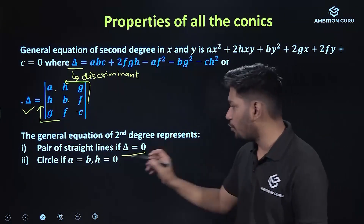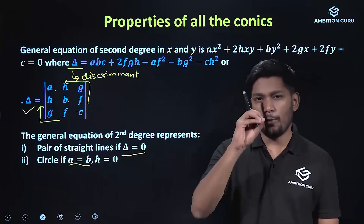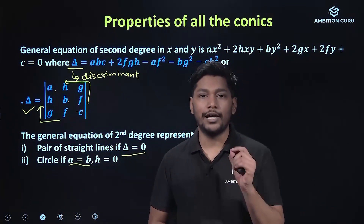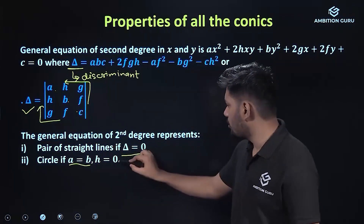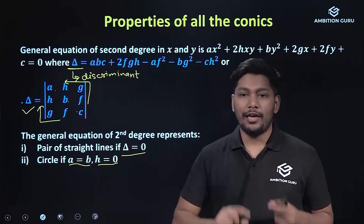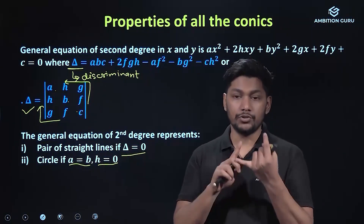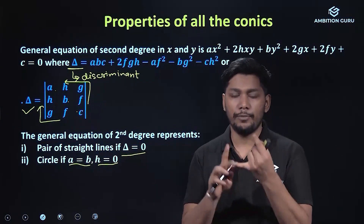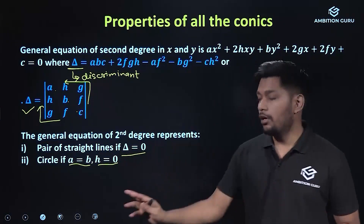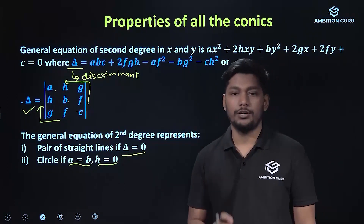If a equals b — that is, the coefficient of x² equals the coefficient of y² — and h equals 0, meaning the xy term is missing, then the conic is a circle.